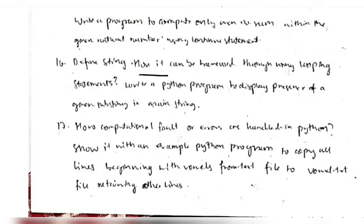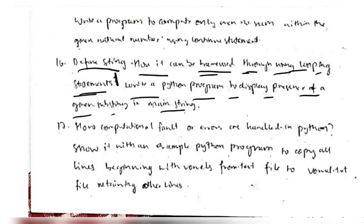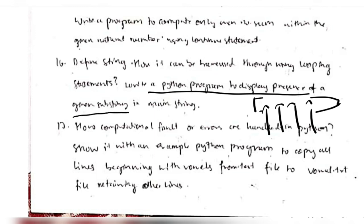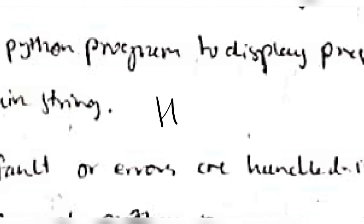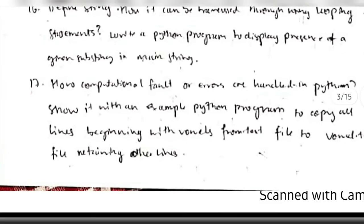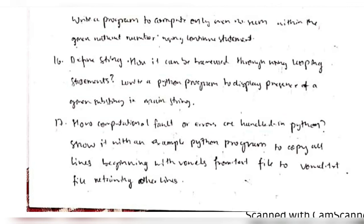The last questions are: 'Define a string and how it can be traversed through looping statements' — a string is an array of characters, so we can traverse it using the index number (array[0], array[1], etc.) with a loop. 'Write a Python program to display the presence of a given substring' — use the 'in' operator: for example, 'he' in 'hello' returns True, else False. The last question is from another module, so we won't discuss it now. That's all for Module 2 of Python — thank you for watching.